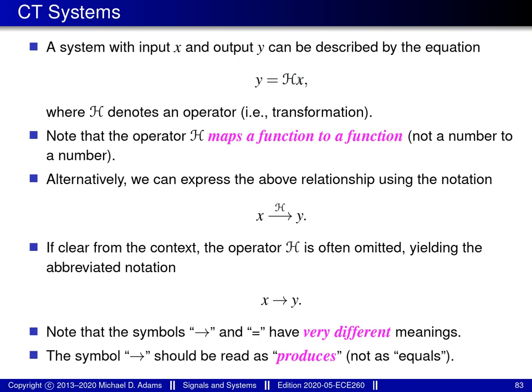The operand to this operator, which is x in this case, corresponds to the input to the system. The result when we apply the operator H to x yields the output produced from the system H when the input is x. In other words, the quantity y here is the output of the system.